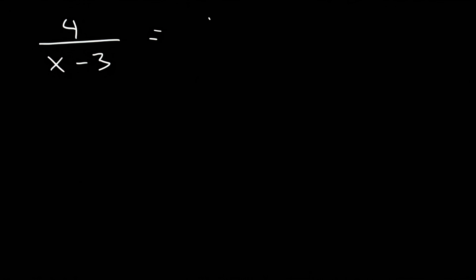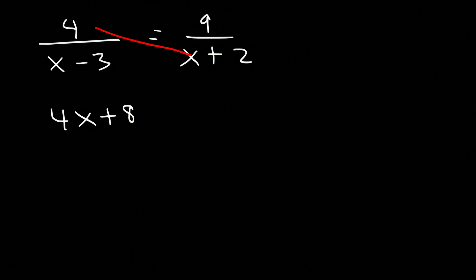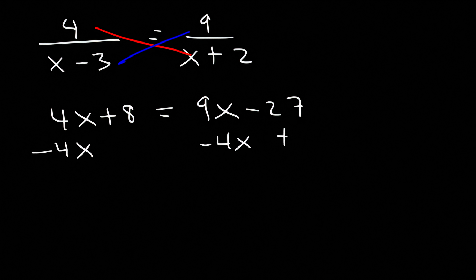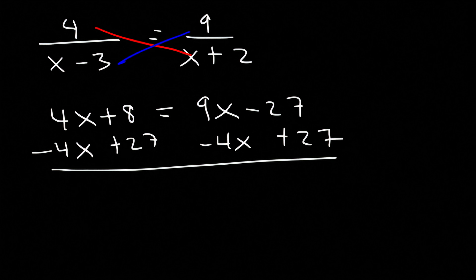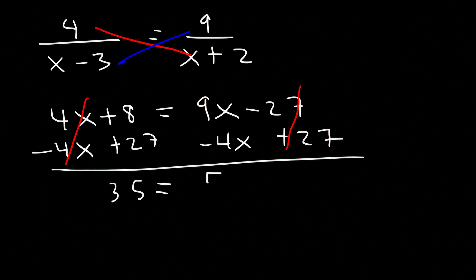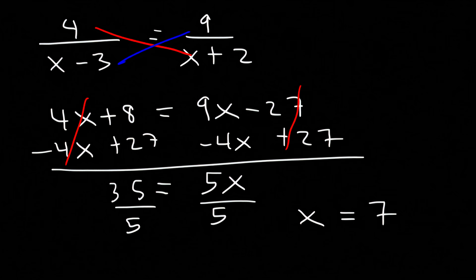Now what about this one: 4 divided by x minus 3 equals 9 over x plus 2. Cross multiply. So 4 times x plus 2 is 4x plus 8, and 9 times x minus 3 is 9x minus 27. Let's subtract both sides by 4x and add 27 to both sides. 8 plus 27 is 35, and 9 minus 4 is 5. Divide by 5: 35 divided by 5 is 7. So x is equal to 7.